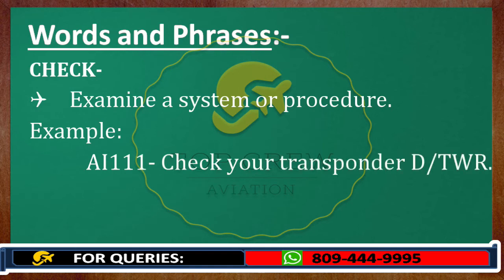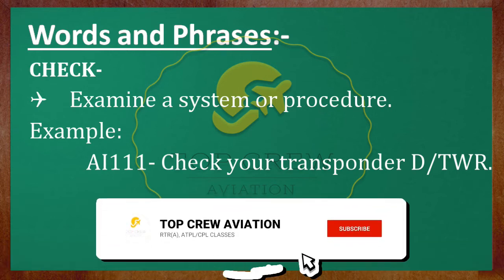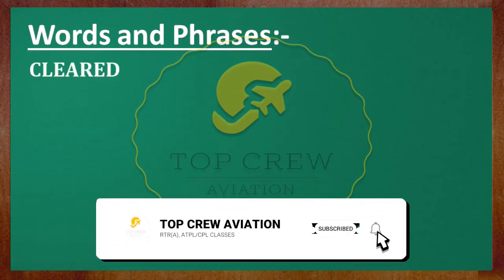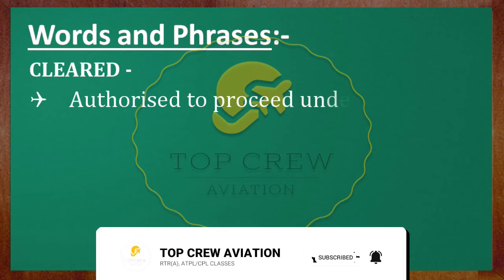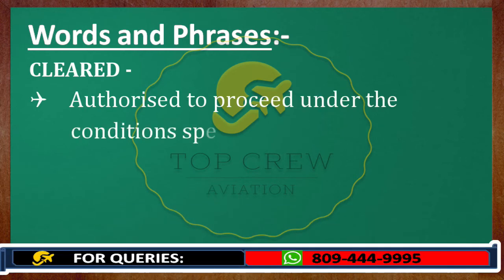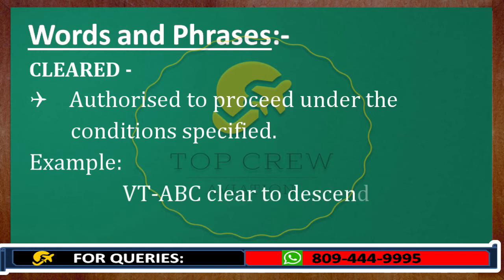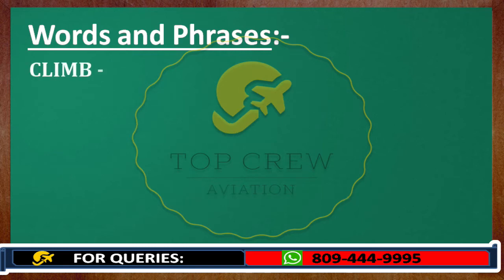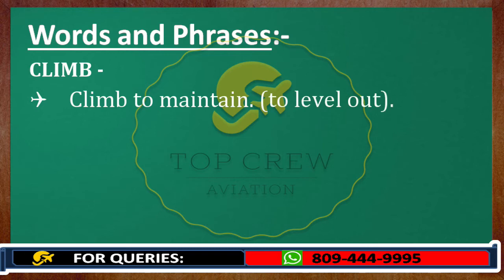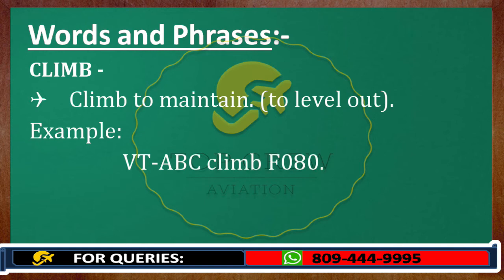Next is Clear, which means authorized to proceed under the conditions specified. For example, Victor Tango Alpha Bravo Charlie, clear to descend flight level 080. Next is Climb, which means climb to maintain, to level out. For example, Victor Tango Alpha Bravo Charlie, climb flight level 080.